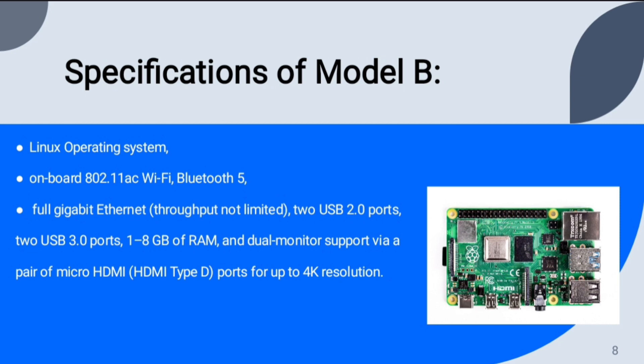It supports dual-monitor output via a pair of micro HDMI (Type D) ports for up to 4K resolution. The 8 GB version has a revised circuit board. The Pi 4 is powered via a USB-C port, enabling additional power to downstream peripherals, but the Pi can only be operated at 5 volts — not 9 or 12 volts like other mini computers of this class.